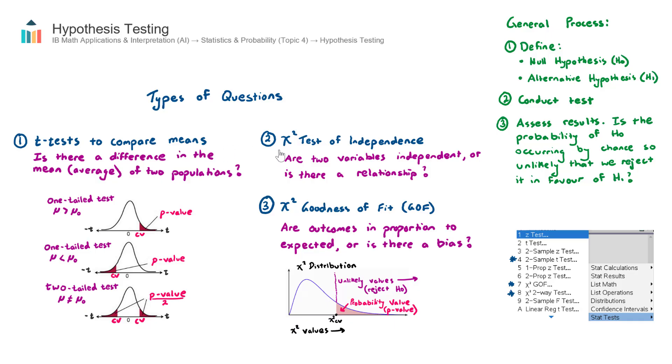Okay, the second type of question is a chi-squared test of independence, which is about deciding, are two variables independent, or is there a relationship?